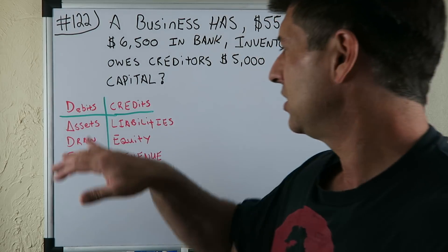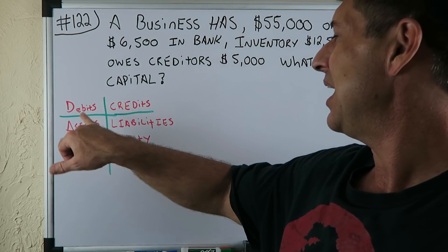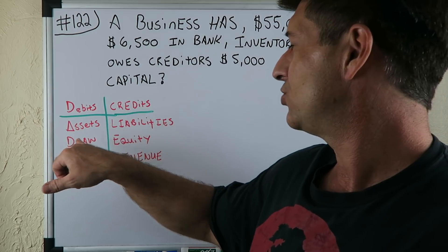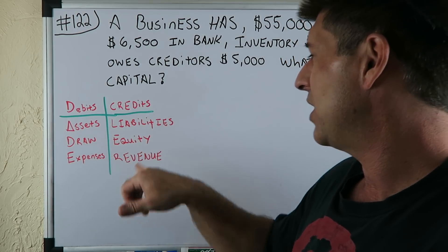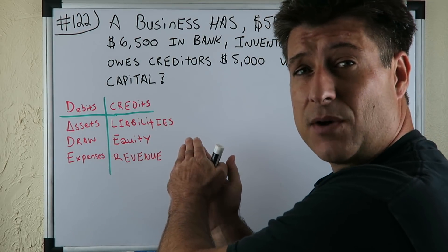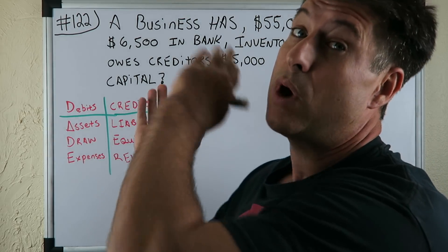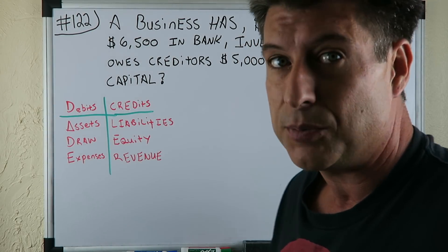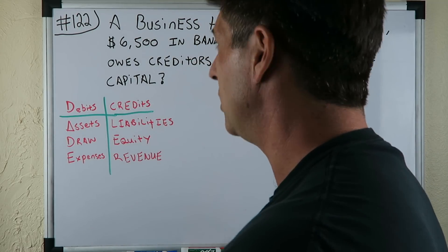Let's look at our DC Aid Lure: Debits, Credits — Asset, Draw, Expense, Liabilities, Equity, Revenue. This is why I have all my subscribers. If you don't know about this, watch my older videos, because it will help you if you're a beginner. If you've been with me, you know.